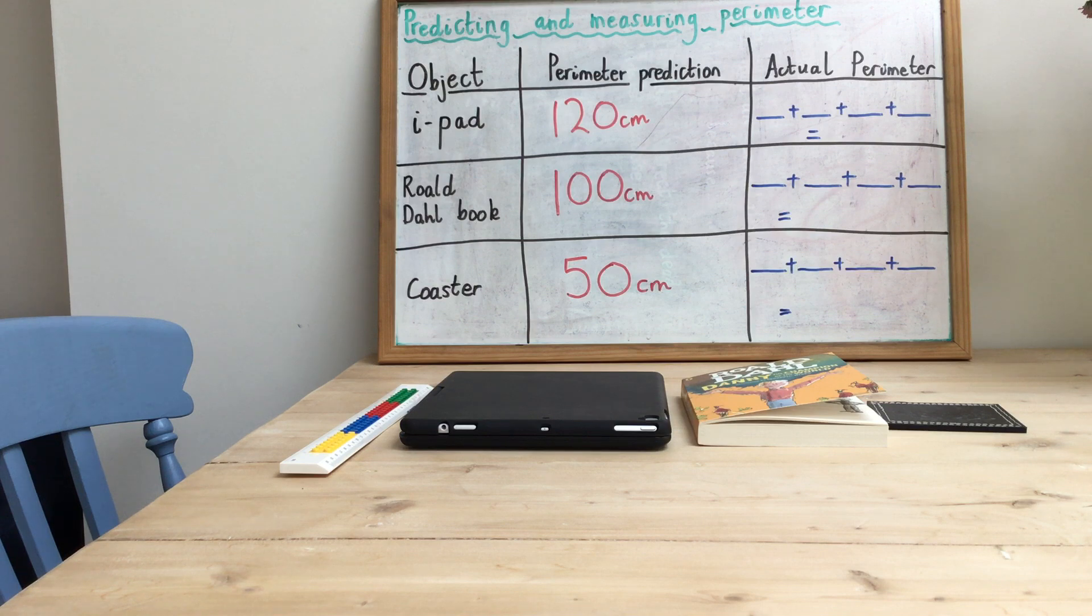You are going to be using some objects that you can find around your house and you're going to predict what you think their perimeters are going to be and then you're actually going to measure it and see how close your prediction got.